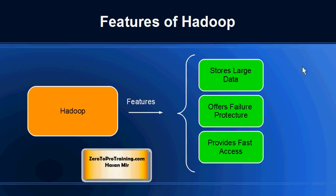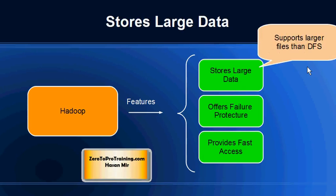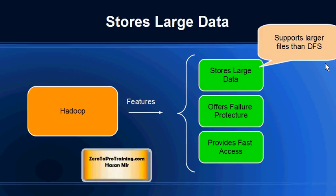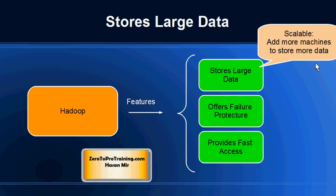Hadoop is designed to address big data issues. The data you could store using Hadoop could go into terabytes and petabytes. The way it lets you store large amounts of data is by spreading the data across a large number of machines. The file sizes it supports are much larger than what you can store using a distributed file system. Scalability is built in — you can add more machines to get more storage space.